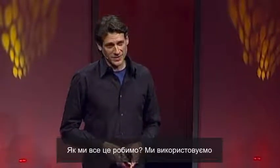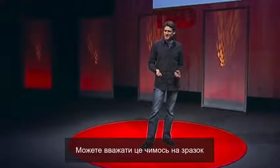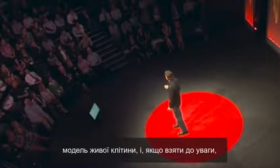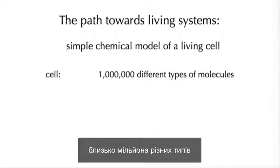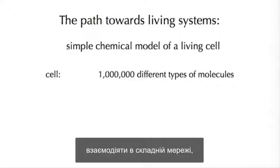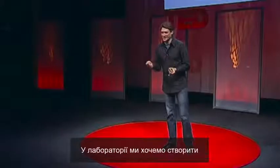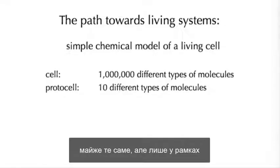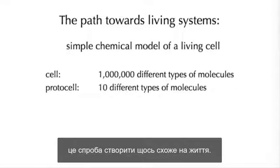How do we do this? We use a model system we call a protocell — think of it as a primitive cell. It's a simple chemical model of a living cell. A cell in your body may have on the order of millions of different types of molecules that come together in a complex network to produce something we call alive. In the laboratory, we want to do much the same but with on the order of tens of different types of molecules — a drastic reduction in complexity, but still trying to produce something that looks lifelike.